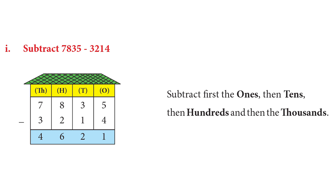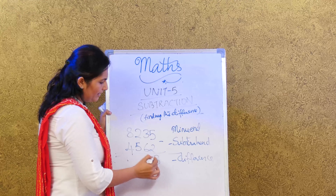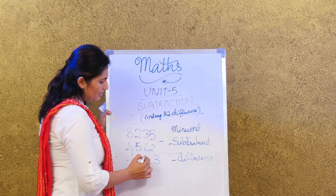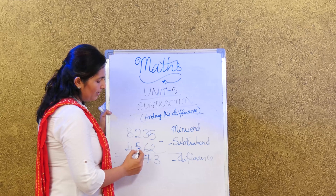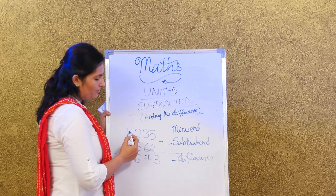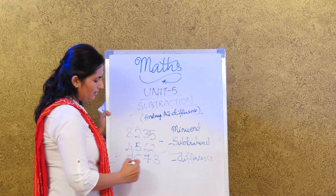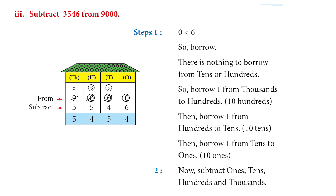Let us try another one: 8235 minus 4562. 5 minus 2 is 3. Here 3 is smaller than 6, so we have to borrow — 13 minus 6 is 7. Since we borrowed, the digit becomes 1, and 1 is smaller than 5, so we borrow again — 11 minus 5 is 6. Since we borrowed, the next digit becomes 3. So 3673 is our answer. The rule from page 88 is: subtract the ones, then the tens, then the hundreds, then the thousands.